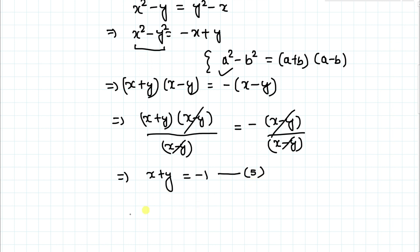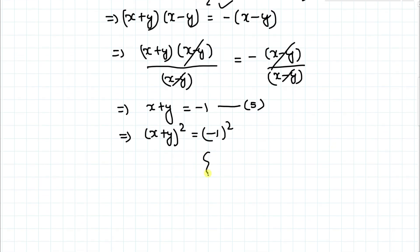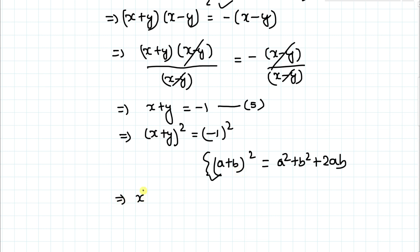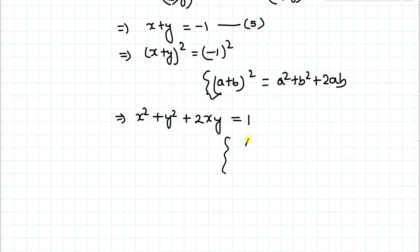In the next step, we square both sides: (x plus y) whole squared equals (minus 1) squared equals 1. Applying the algebraic identity (a plus b)² equals a squared plus b squared plus 2ab, with a as x and b as y, we get x squared plus y squared plus 2xy equals 1.